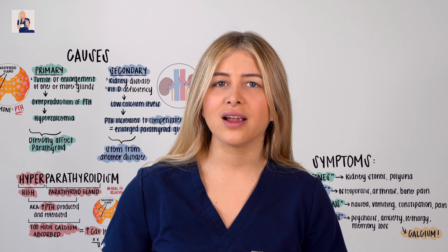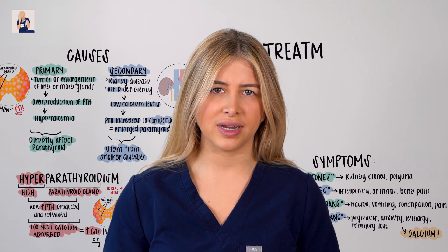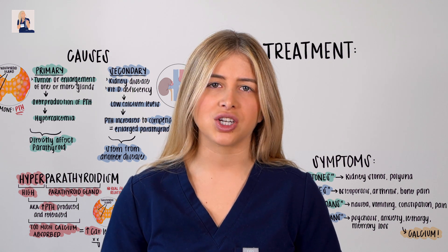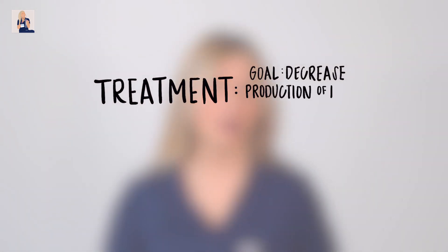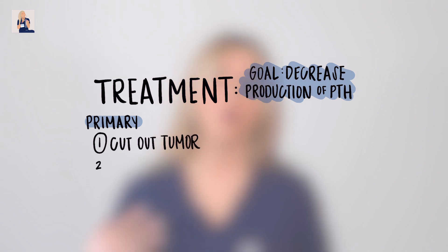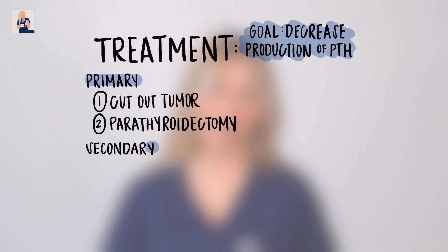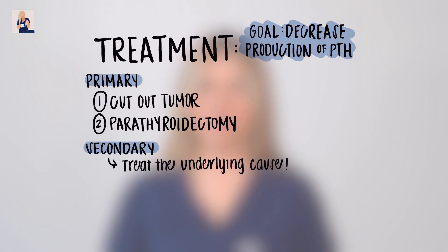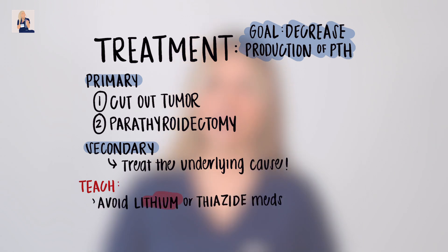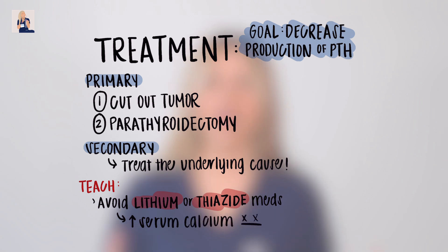So we've been diagnosed with hyperparathyroidism — now how do we treat it? Because the patient is experiencing an overproduction of parathyroid hormone, our goal is to decrease that production. For primary hyperparathyroidism, we cut out the tumor or perform a parathyroidectomy. For secondary hyperparathyroidism, we treat the underlying cause. Lastly, we must educate patients on avoiding lithium and thiazide medications, because these increase calcium in the blood and will worsen the current problem.